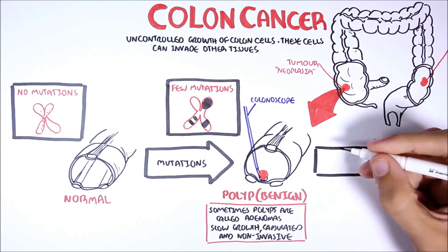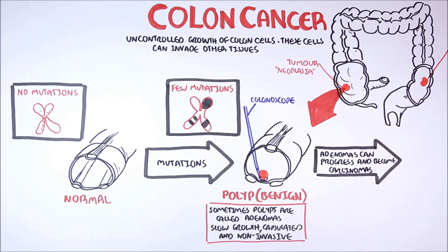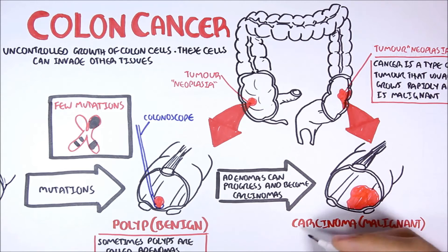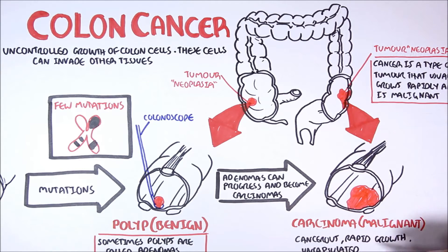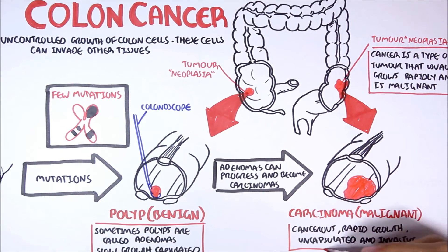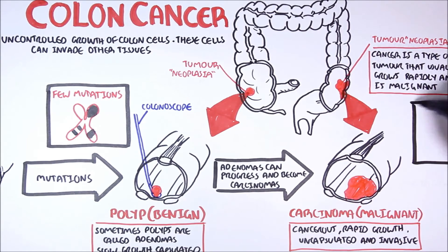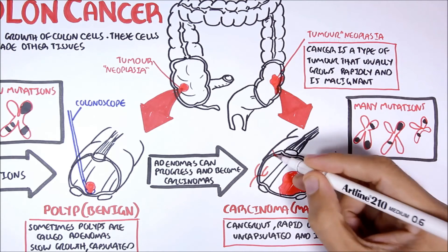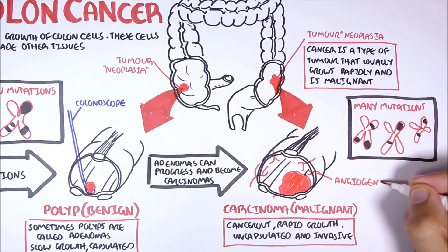Some adenomas can progress and become carcinomas. Carcinomas are the deadly ones. They are malignant. Carcinomas are cancerous. They grow rapidly, are encapsulated, and are invasive. For colon carcinomas to develop, we would expect to see multiple mutations in the DNA of many chromosomes. Carcinomas and big tumors also usually have a lot of blood supply, as these abnormal growing cells require many nutrients. Therefore, in and around tumors, a process called angiogenesis occurs, which is the formation and maturation of blood vessels.